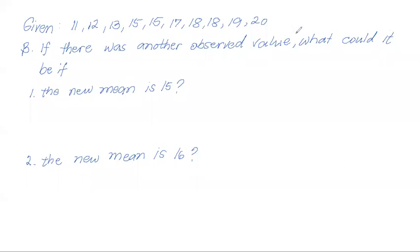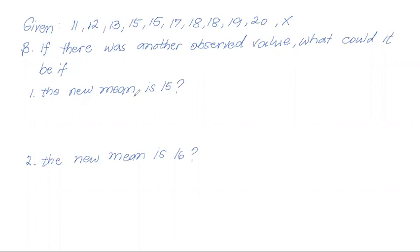We are given the same data set, but this time we are asked to find another value x. If there was another observed value added, and the new mean of the new data set is 15, what is x?